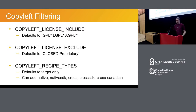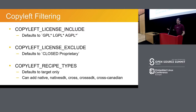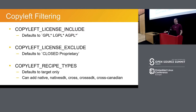The archiver can also filter by recipe type. It defaults to target, which is basically when you build something for installation in your final image, but there are other recipe types: native, native SDK, cross, and a few others. So if you want to grab the source when you build an SDK, you might want to extend this to capture some of those as well.